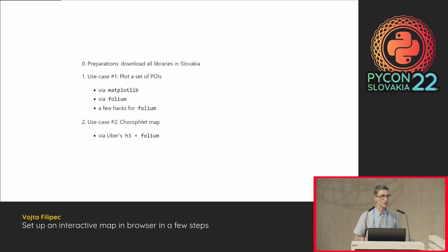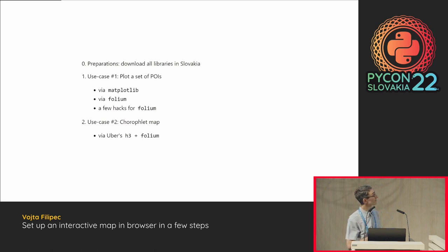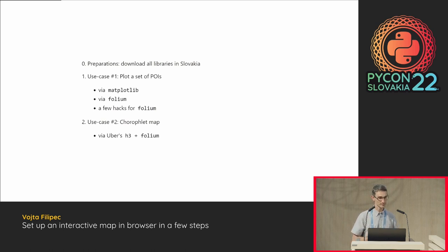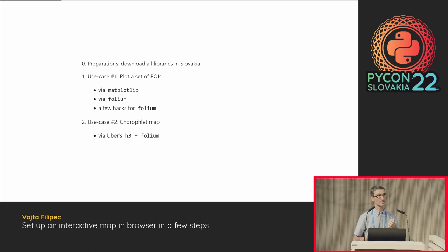Here's how we'll make these maps. First I'll prepare my data — we'll download all libraries in Slovakia. The main goal is to promote OpenStreetMap as a reliable and rich source of information. Then we'll do two use cases. The first: how do I plot my libraries on a map one by one? We'll try matplotlib first, then I'll show you to skip the complications and go to Folium instead, with a few useful hacks. The second use case is grouping points into areas and plotting those areas — that's called a choropleth map — using Folium and the H3 library developed by Uber.